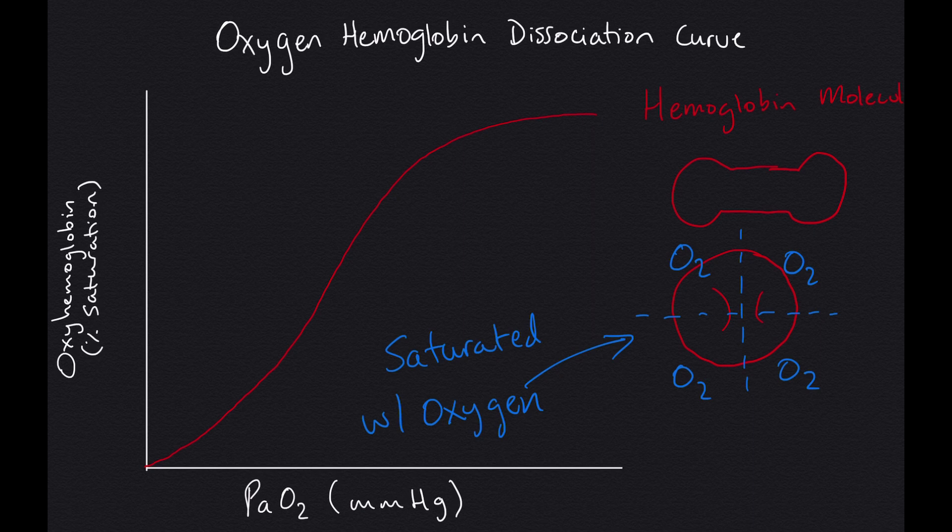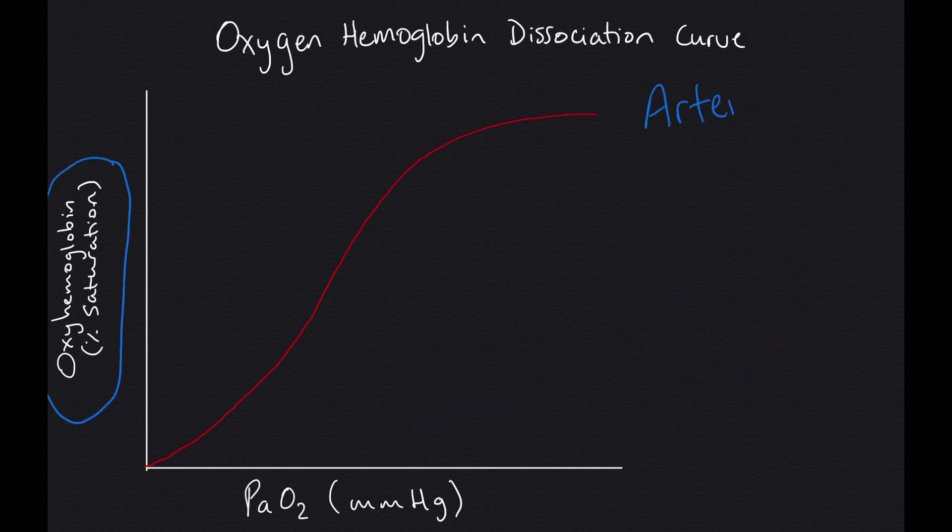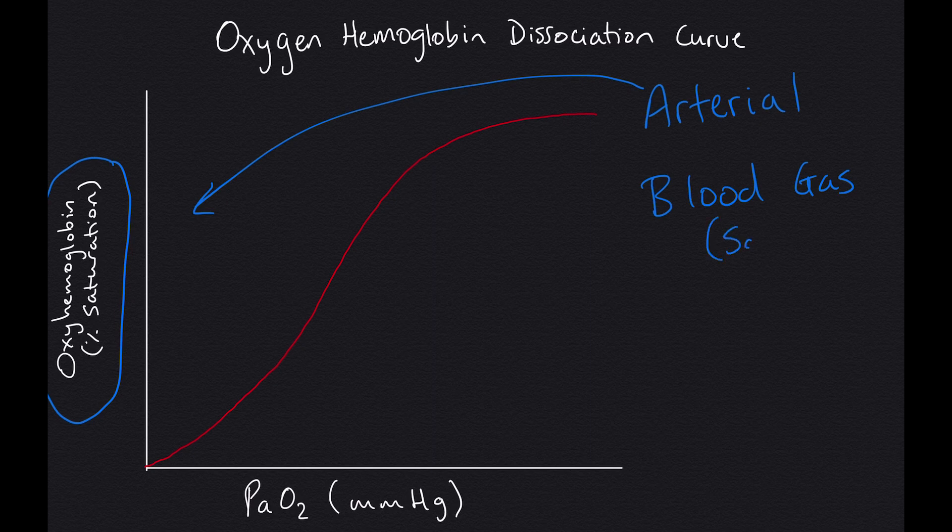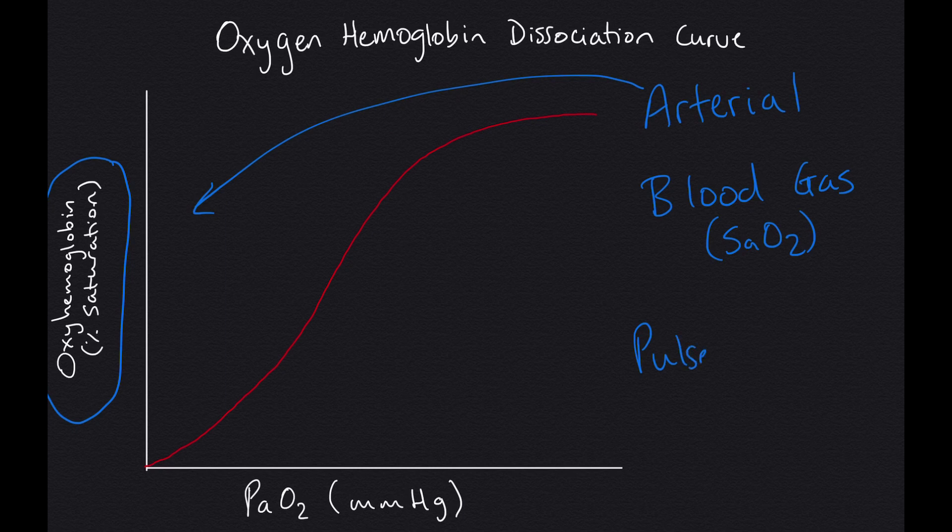Oftentimes, students get confused by the relationship that pulse oximetry plays with this curve. The gold standard for determining oxygen saturation at the arterial level is a test called the ABG or arterial blood gas. That test shows us the SaO2 levels. That said, obtaining an ABG isn't always feasible.